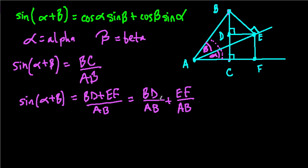Now we have something to work with. Let's look at these ratios: BD over AB, and EF over AB. The idea is to manipulate these ratios to get something helpful — maybe BD over BE or EF over AE — because we want to relate some leg to some hypotenuse in one of these right triangles, like triangle BDE or triangle AEB.